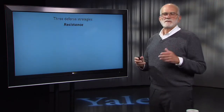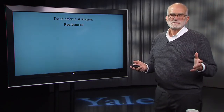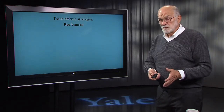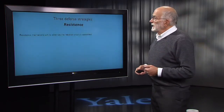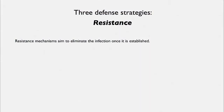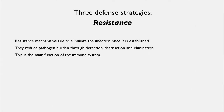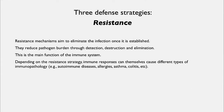Now, if you have not been able to avoid the problem, then you will resist it. Resistance mechanisms try to eliminate infections once they're established. They reduce pathogen burden by detecting it, destroying it, and throwing it out of the body. So that's the main function of the immune system. And depending on the particular strategy, immune responses can cause different kinds of pathology.